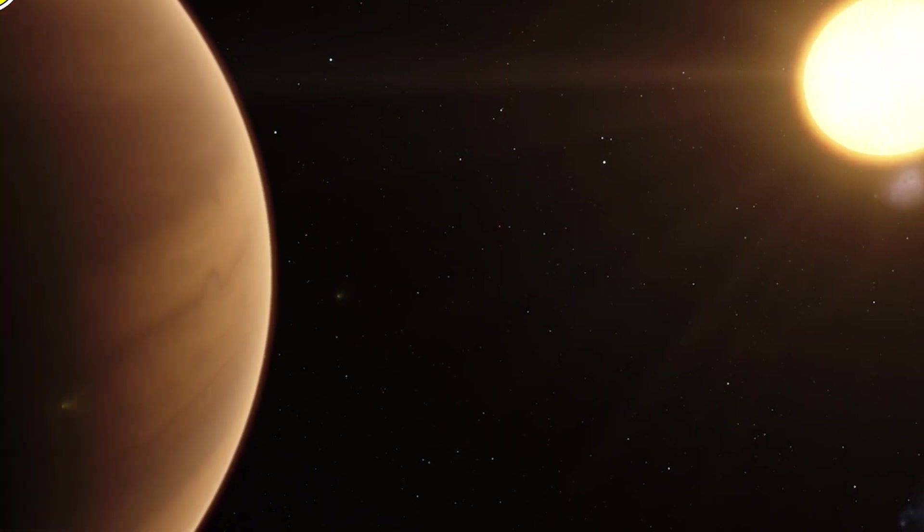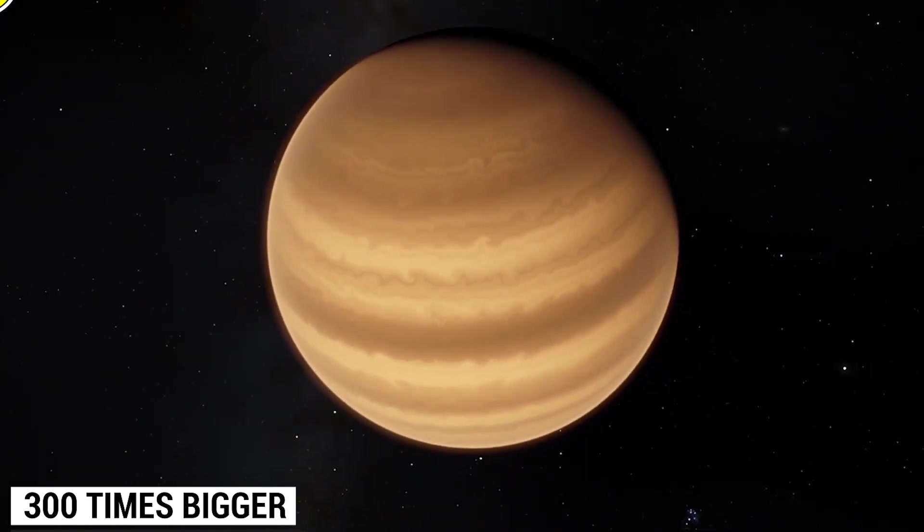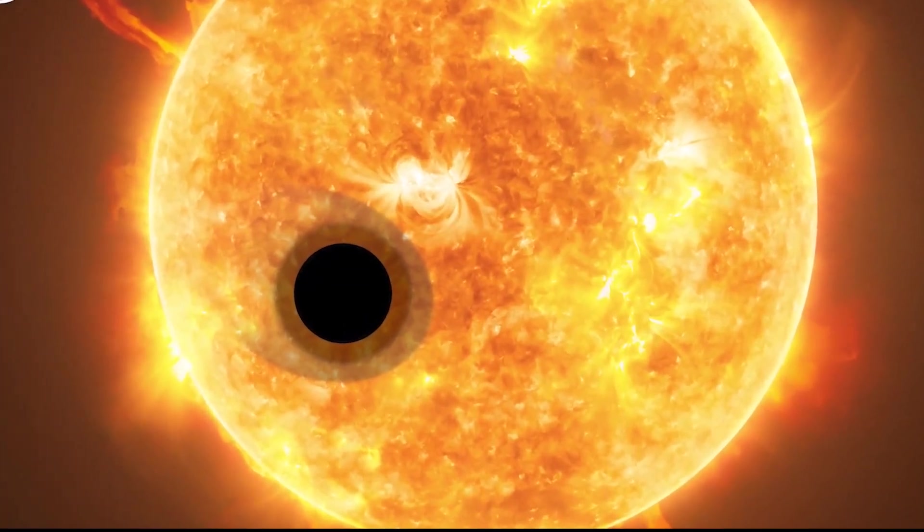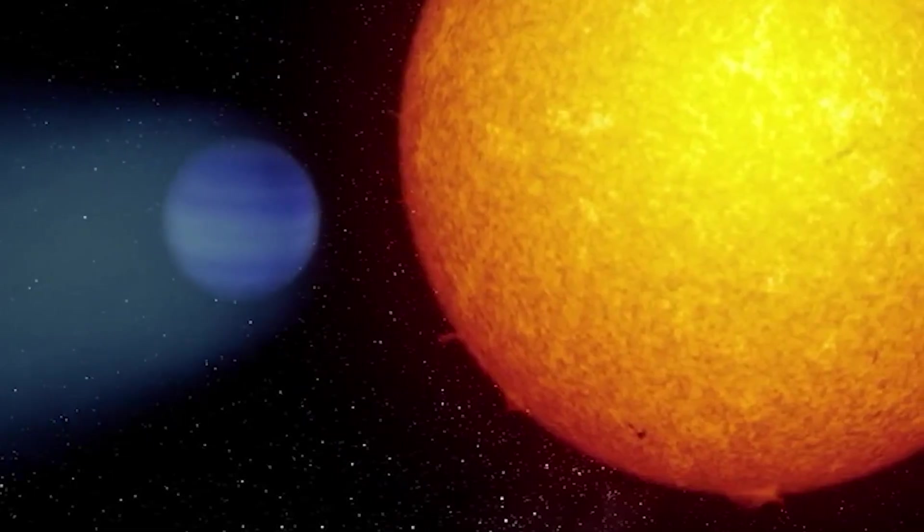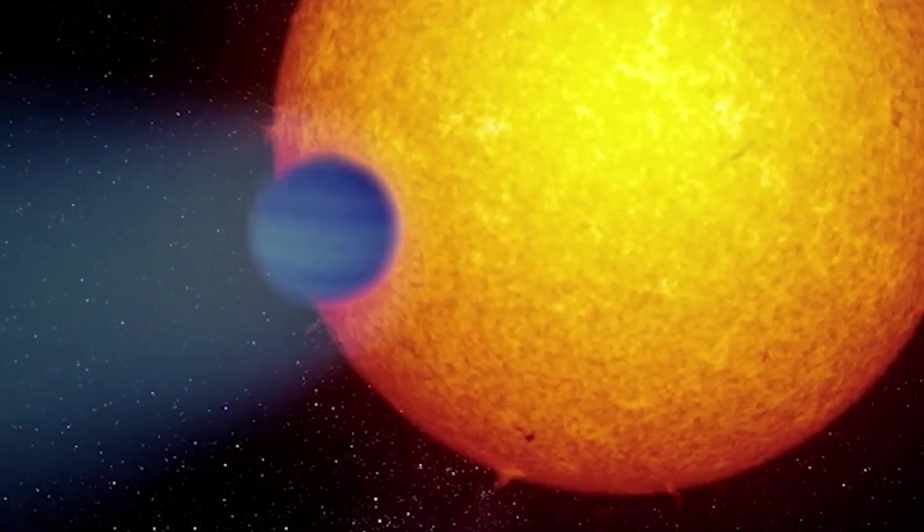The exoplanet is Jupiter-sized, yet barely 30 Earth masses. Jupiter is 300 times bigger than Earth. WASP-107b's center is only 4-fold larger than Earth's, whereas it should be 10 times larger. This gives WASP-107b a low density. It's similar to a drifting marshmallow.